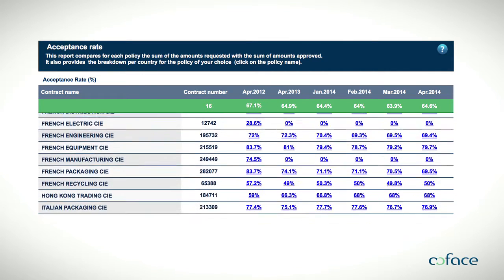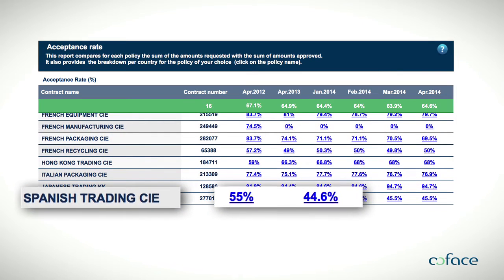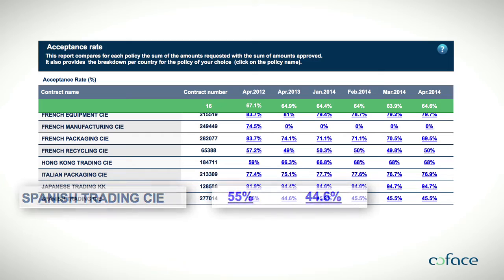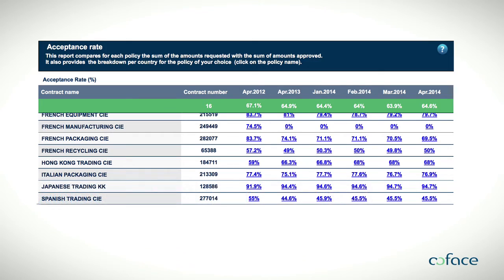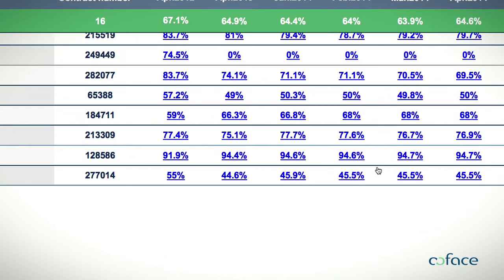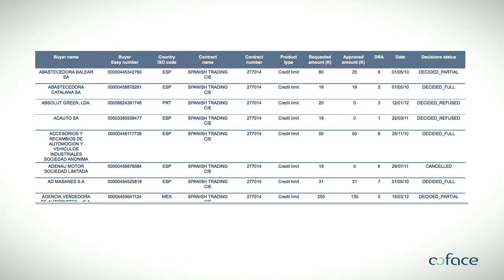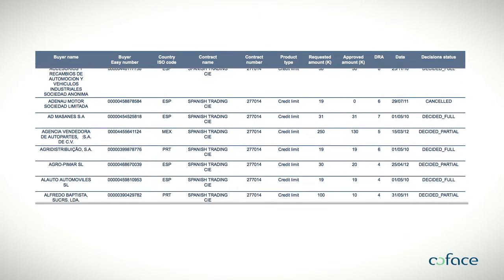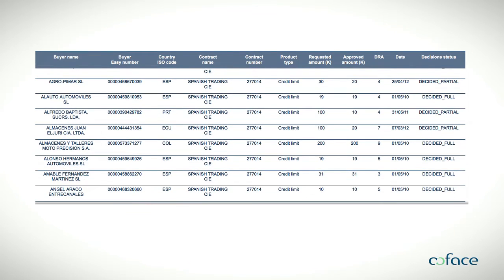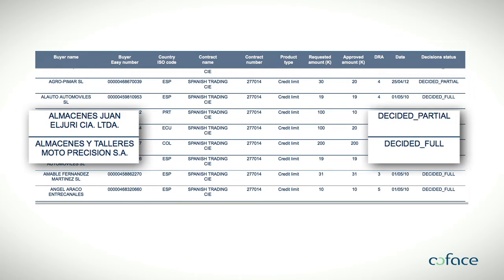Monitoring your program may also lead you to challenge your local entities on their credit risk management. Should they be unsatisfied, you would be in a position to find facts and figures in a few clicks. When key performance indicators like the acceptance rate show differences through time, find out about the status of credit lines and the reasons behind decisions.